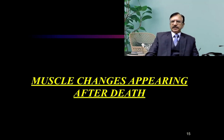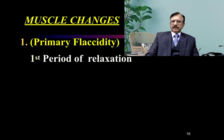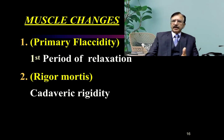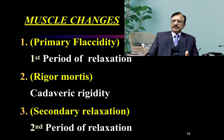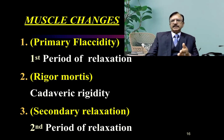The muscle changes which appear after death are: first, primary flaccidity — the first period of relaxation, due to loss of innervation and cessation of CNS. Then after some time, rigor mortis — that is after two to three hours, the rigor mortis or cadaveric rigidity starts. The third change is secondary relaxation, which is the passing on to the next stage, that is putrefaction. When putrefaction sets in, the rigor mortis passes off and the second relaxation starts.